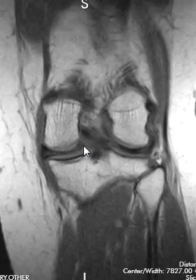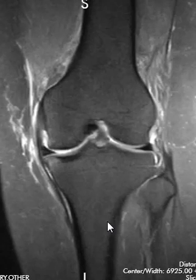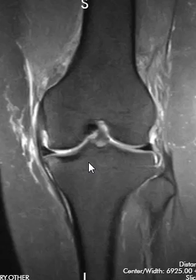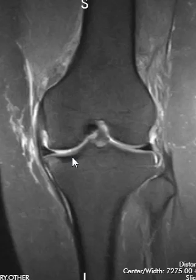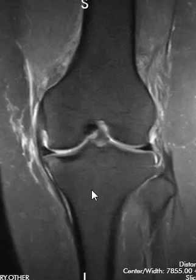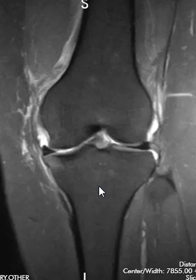And right back over here is where we'll see the tear. This is just another view, the same thing, but now the bones look dark and everything looks dark except for fluid. Fat and subcutaneous fat here looks dark, marrow that has fat looks dark, and the menisci look really dark. Fluid is white, so if there's a tear, it'll show up really nicely on this.